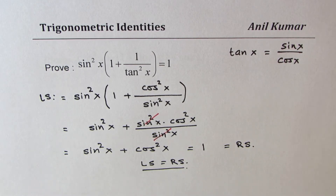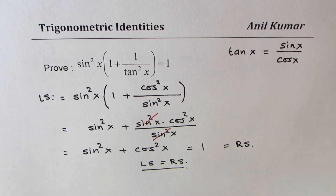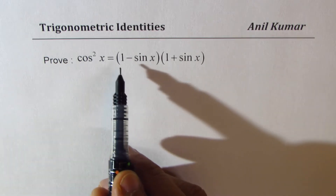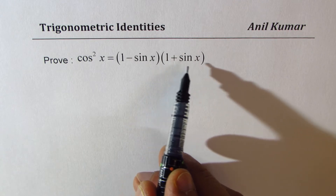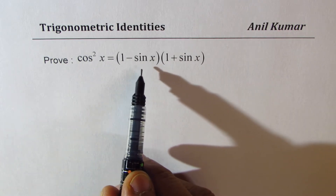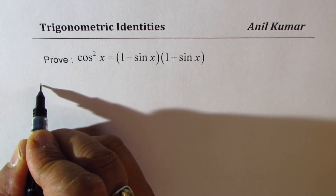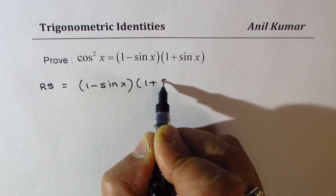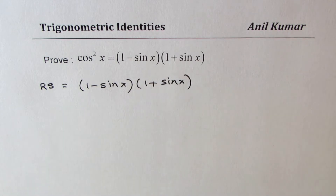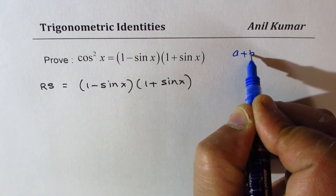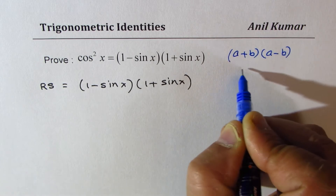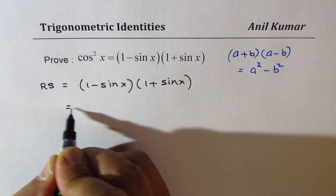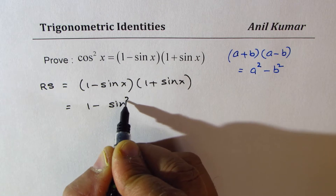So we have shown that left side equals right side — this identity is true. Let's take another one. This time we have cos square x equals 1 minus sin x times 1 plus sin x. Let's begin with the right side this time. So right side is equal to 1 minus sin x times 1 plus sin x. As we know, a plus p times a minus p is basically equal to the difference of squares.